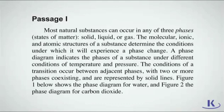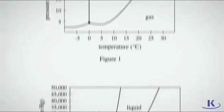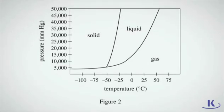A phase diagram indicates the phases of a substance under different conditions of temperature and pressure. The conditions of a transition occur between adjacent phases, with two or more phases coexisting, and are represented by solid lines. Figure 1 shows the phase diagram for water, and Figure 2 the phase diagram for carbon dioxide.